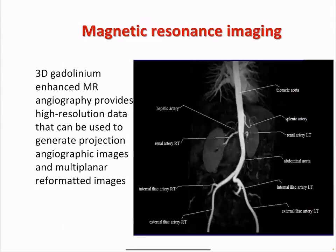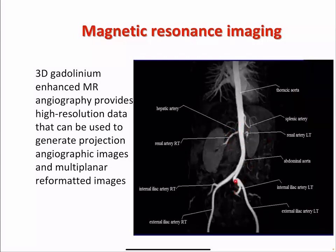MRI: 3D gadolinium-enhanced MR angiography provides high-resolution data that can be used to generate projection and topographic images and multiplanar reformatted images. An MR angiogram shows the thoracic aorta and abdominal aorta and its branches, including the splenic, hepatic, right renal, left renal, and common iliac vessels, and their branches — the internal and external iliac vessels.